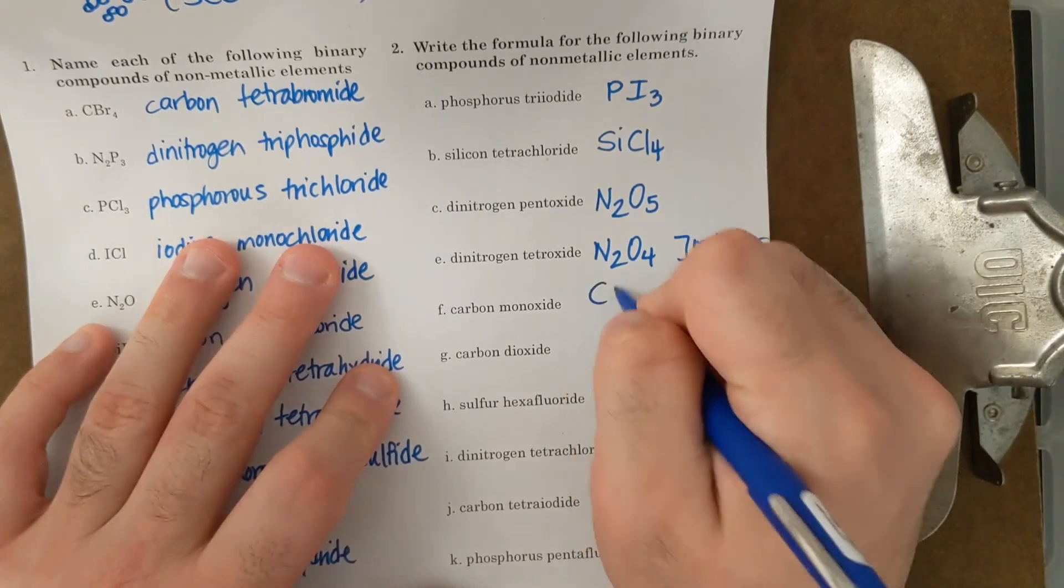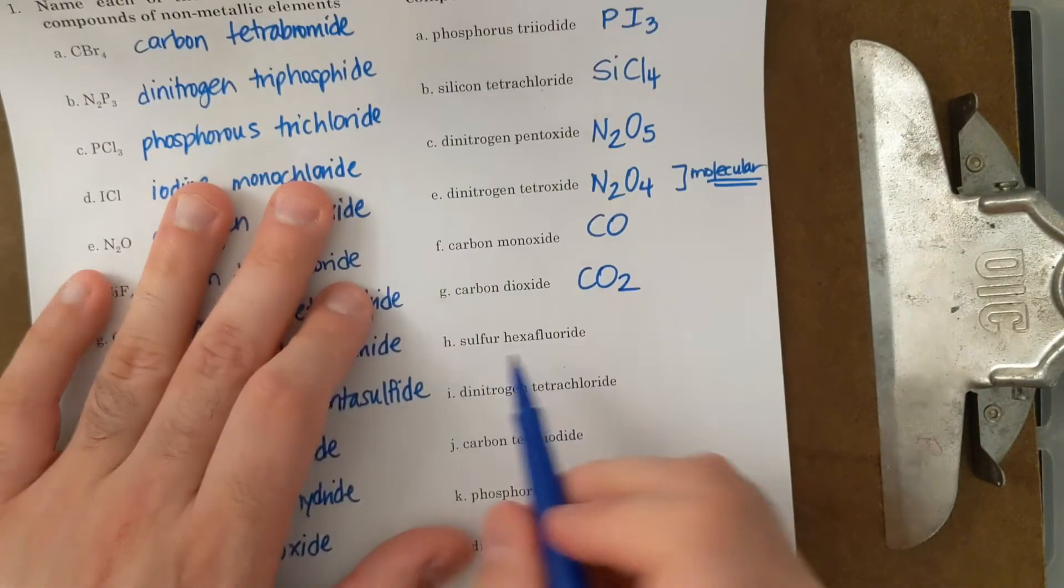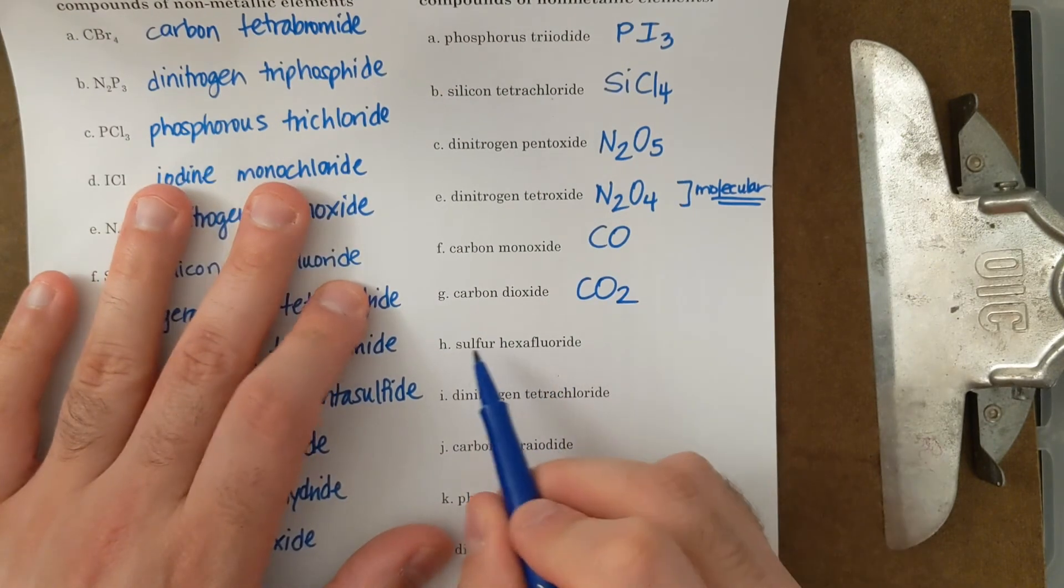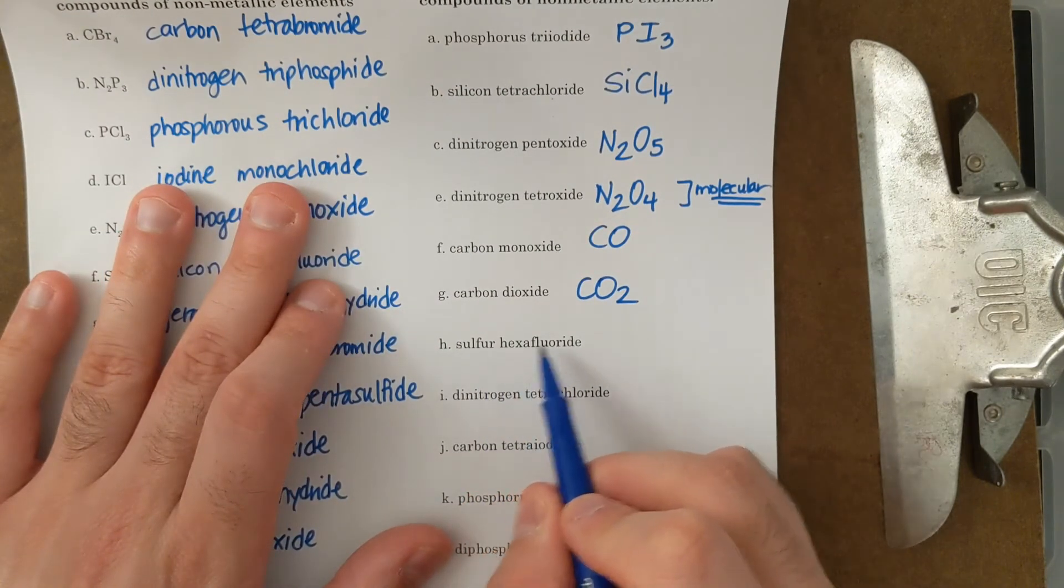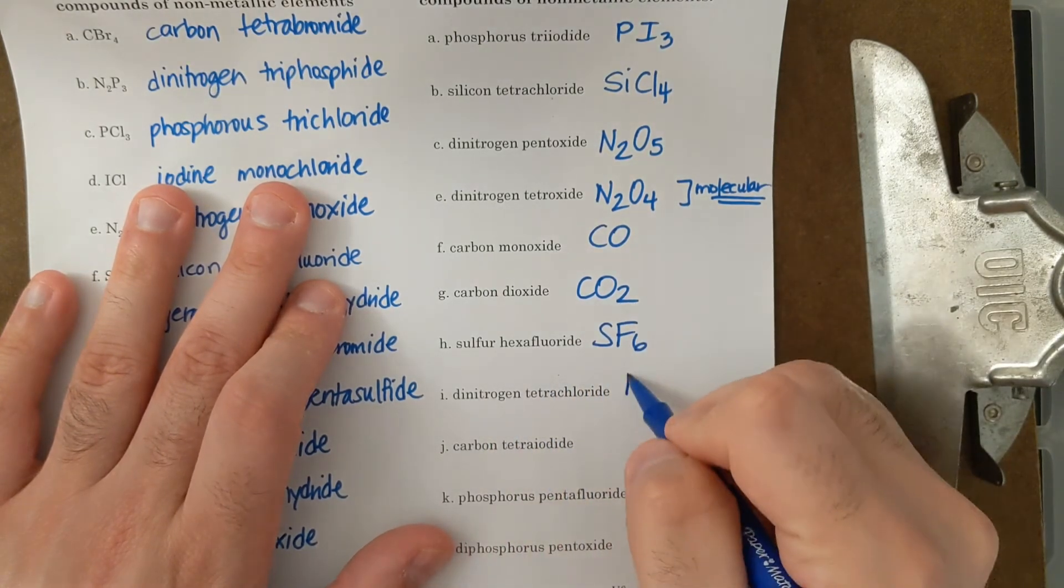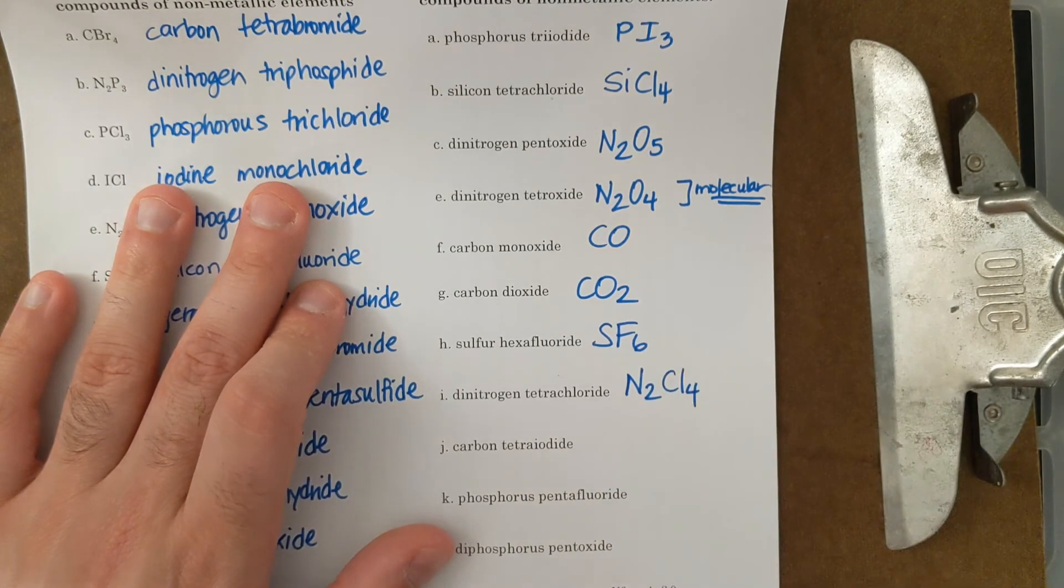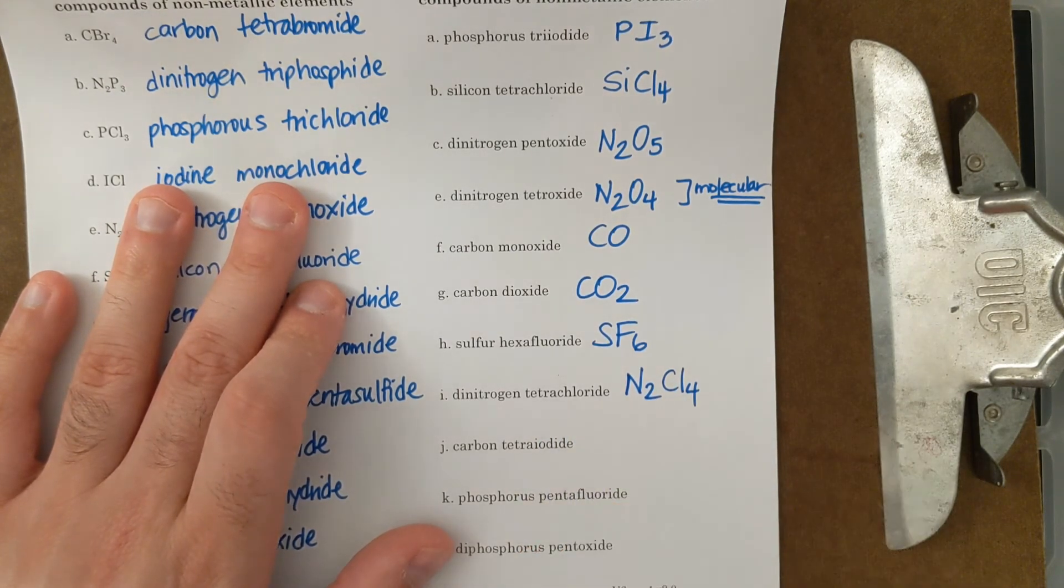Carbon monoxide, CO. Carbon dioxide, CO2. Sulfur hexafluoride, one sulfur. Hexa is six fluorides, SF6. Dinitrogen, which means two. Tetrachloride, Cl4, four chlorides.